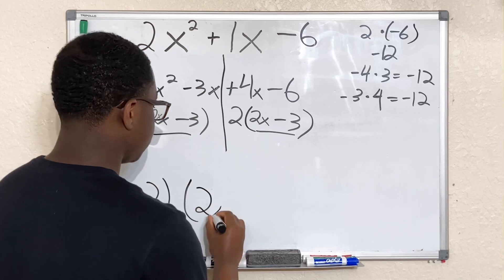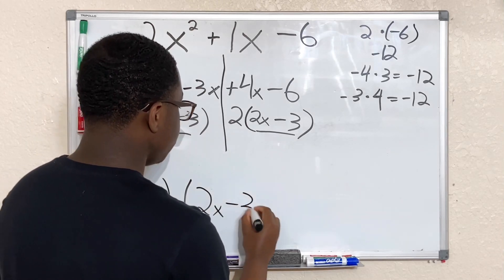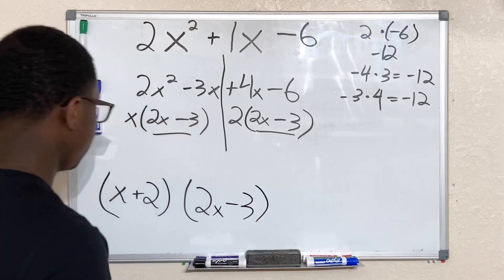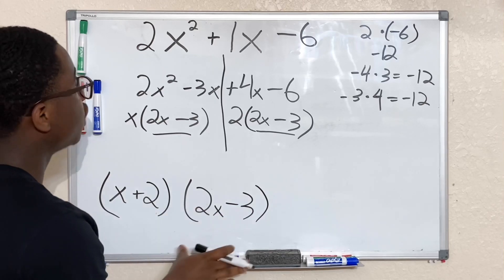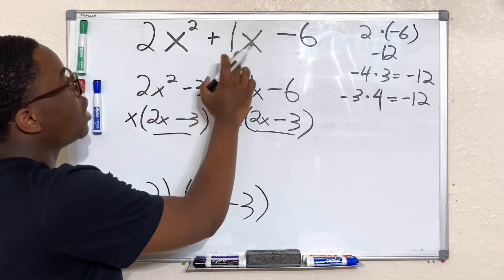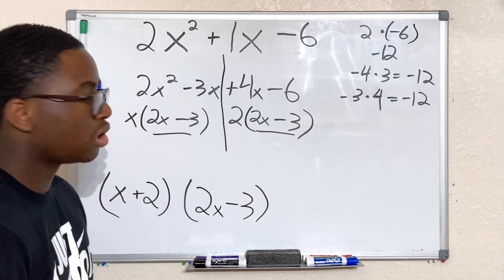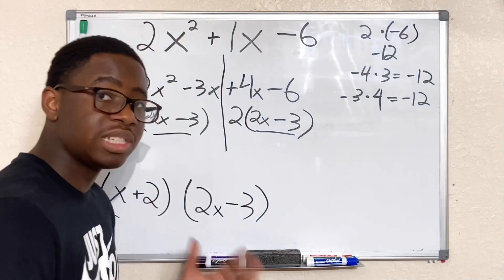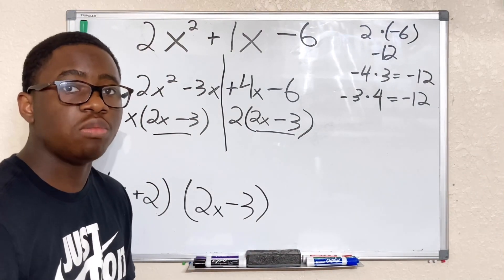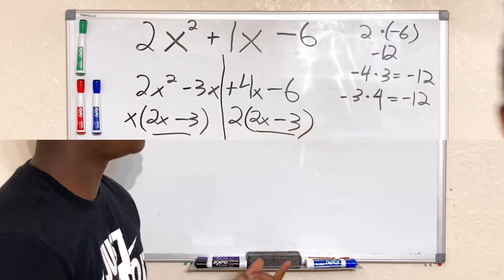Then we have 2x minus 3, which is the same on both sides, so go ahead and write that down here: 2x minus 3. And here we have it, our factored version of 2x squared plus 1x minus 6. So as long as you follow these steps, you should be able to solve any trinomial with the leading coefficient. This is right, well, let's check and reassure ourselves that our answer is correct.